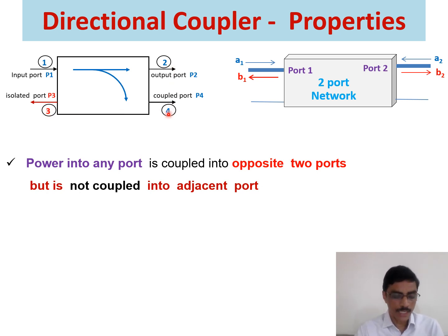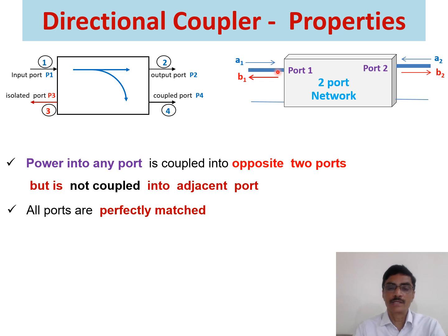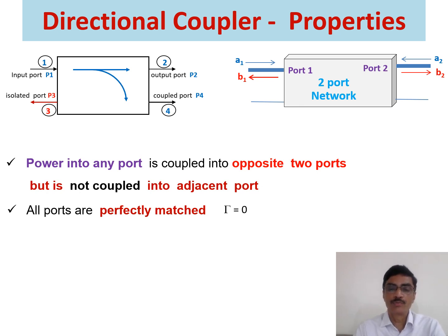Similarly, port number 2 and port number 4 are isolated ports. The second property is all ports are perfectly matched. This means the input impedance at each port is equal to the characteristic impedance of the feeder line. As a result, the reflection coefficient of each port equals 0. So at each perfectly matched port there will be no reflected power. For example, if port number 2 is perfectly matched, B2 will be 0. Similarly, if port number 1 is perfectly matched, B1 will be 0.